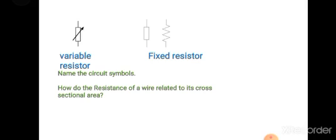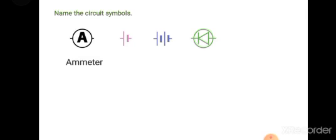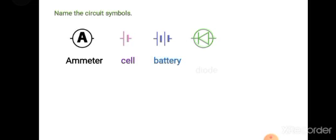How is the resistance of a wire related to its cross-sectional area? They are inversely related — the greater the cross-sectional area, the thicker the wire, and the less resistance will be offered by that wire. There are some circuit symbols shown: ammeter, cell, battery, diode.